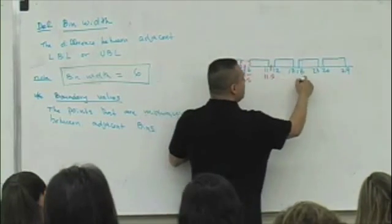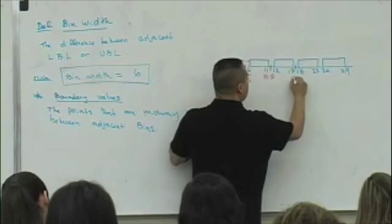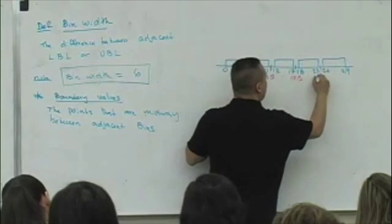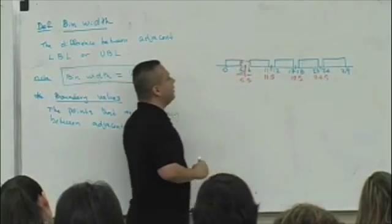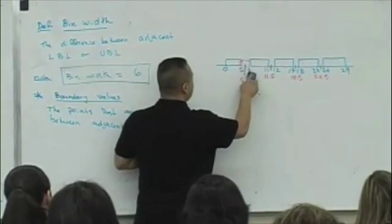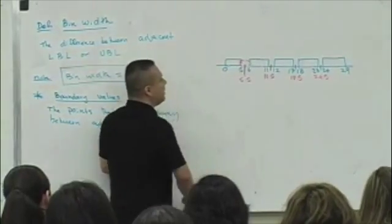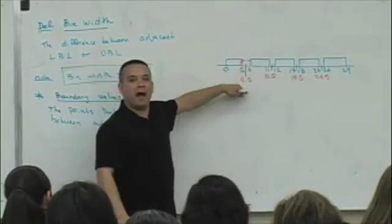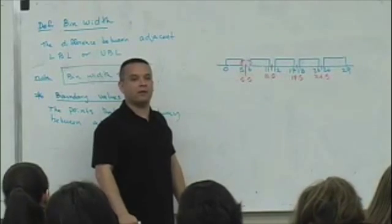When I'm saying that boundary values are the points that are midway between adjacent bins, what I mean is, what number is midway between those two values? The upper bin limit of the first bin and the lower bin limit of the second bin. What number is between five and six? Good. So, you're going to say 5.5. 5.5 is a boundary value. What number is between 11 and 12? 11.5. What's midway between 17 and 18? 17.5. 23 and 24, 24.5. What are these values called again? These are boundary values.